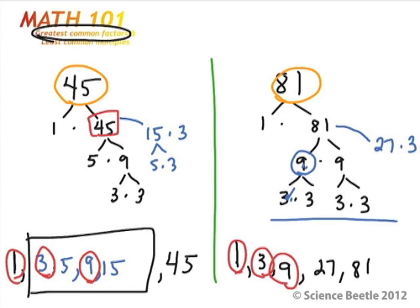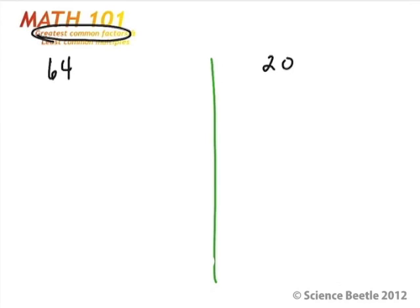And so going back to this, since 9 is the number that's common to both, in this particular case, the greatest common factor to both 45 and 81, in this case, is going to be 9.